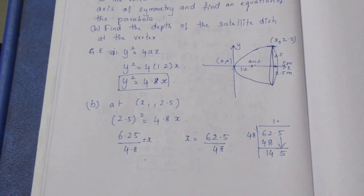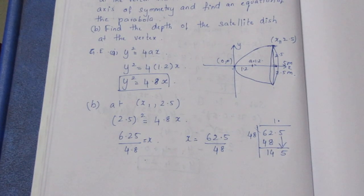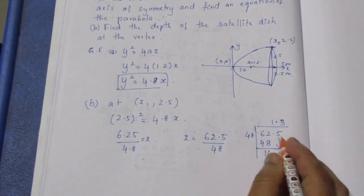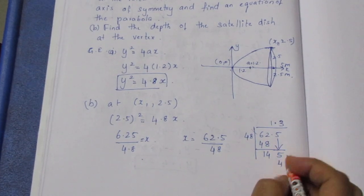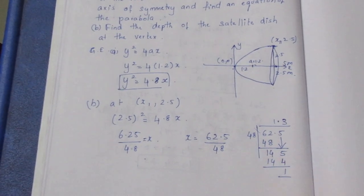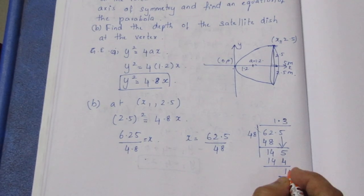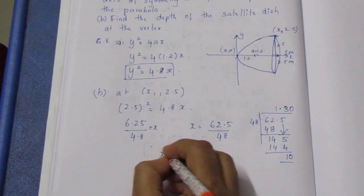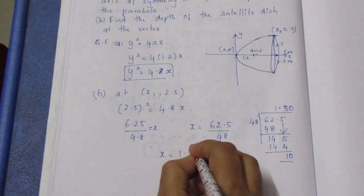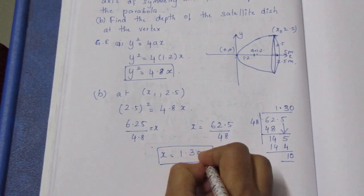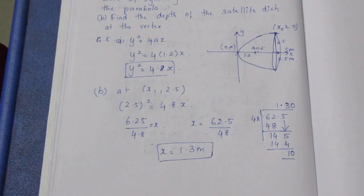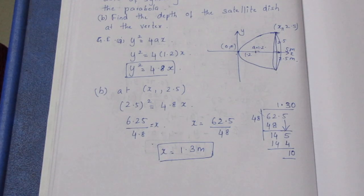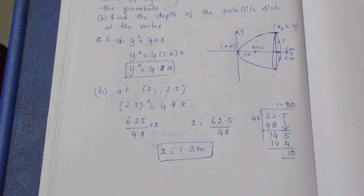48 into 1 gives 48, remainder 14, then decimal point 0. So 1.30. So we have x is equal to 1.3 meter. So the depth of the satellite dish at the vertex is 1.3 meter. Thank you.